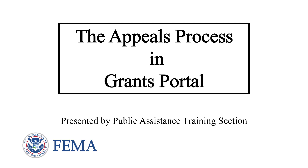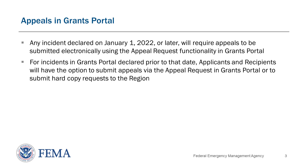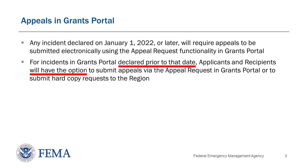Other resources are available to provide greater detail about the Determination Memo and the appeals process overall. The appeals process will be undergoing some changes starting in 2022. Any incident declared on or after January 1, 2022 will require appeals to be submitted using the Appeal Request functionality in Grants Portal. For any incident in Grants Portal declared prior to that date, applicants and recipients will have the option to submit appeals in Grants Portal or to submit their requests to the region as hard copies.